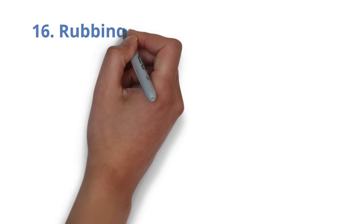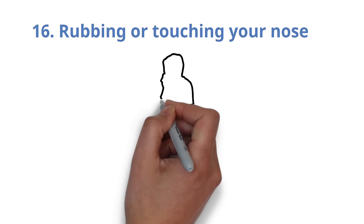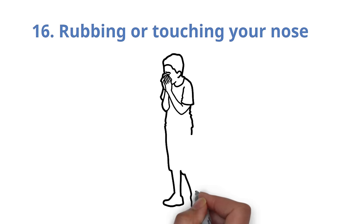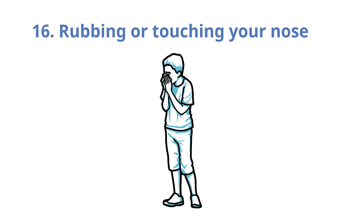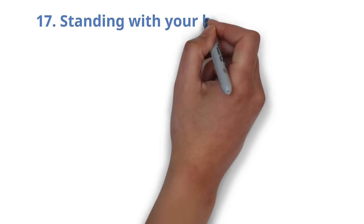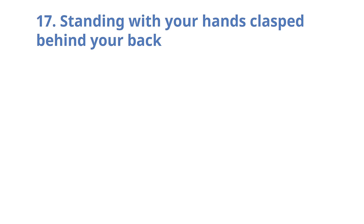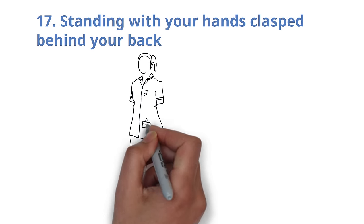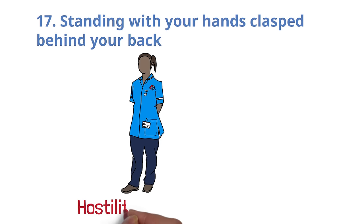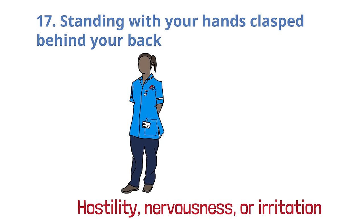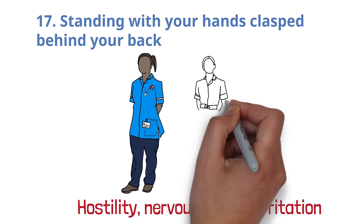Number 16. Rubbing or touching your nose. You seem dishonest when you massage or touch your nose with your index finger. Number 17. Standing with your hands behind your back. Others may interpret your hands clenched behind your back as hostility, nervousness, or irritation, even if it feels like a casual position.